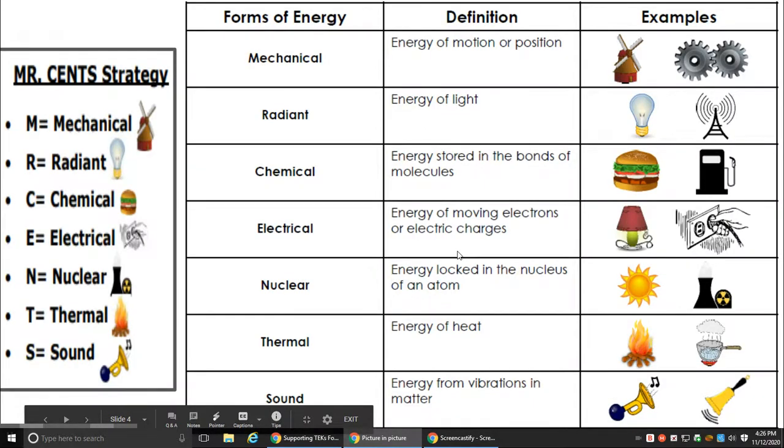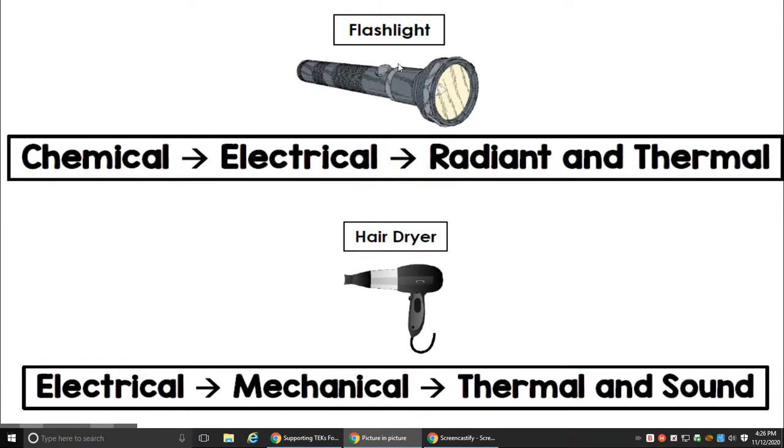Now let's talk about energy transformations. So some examples. If we look at a flashlight, we have to think, well, where's the energy coming from? It's coming from chemical energy, the battery inside the flashlight. That battery, that chemical energy gets transformed into electrical energy, because it goes through wires. And then that electrical energy gets transformed into radiant energy, which would be light, and thermal, which is heat, because then the flashlight gets hot.